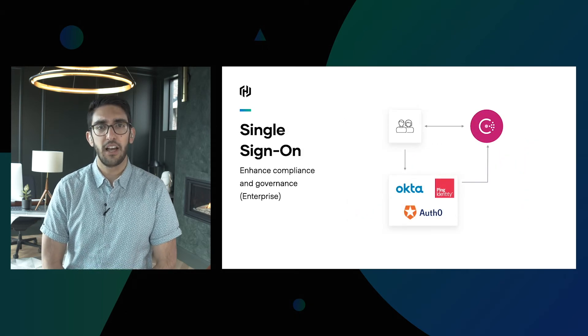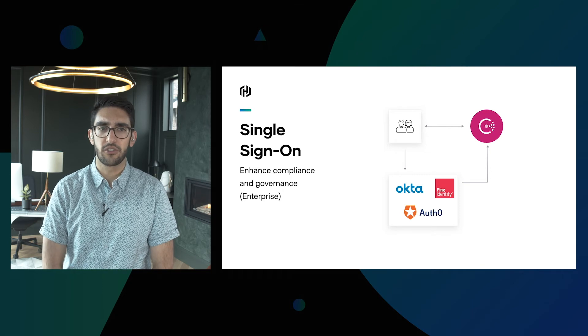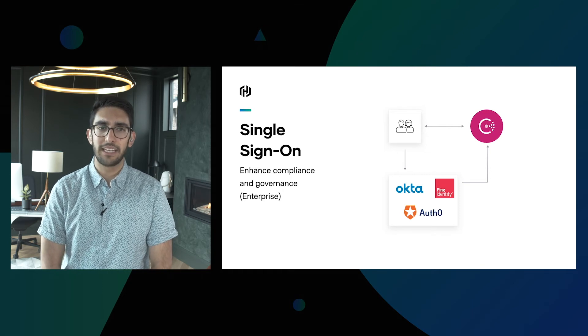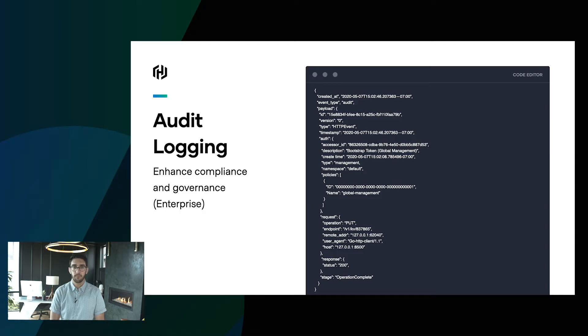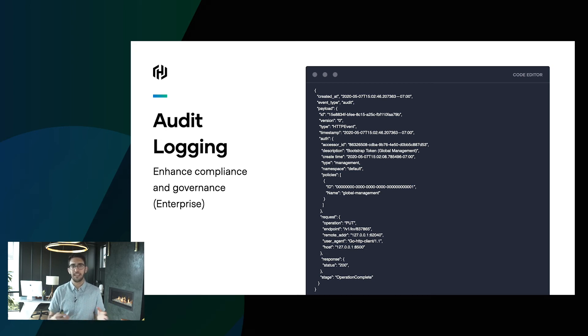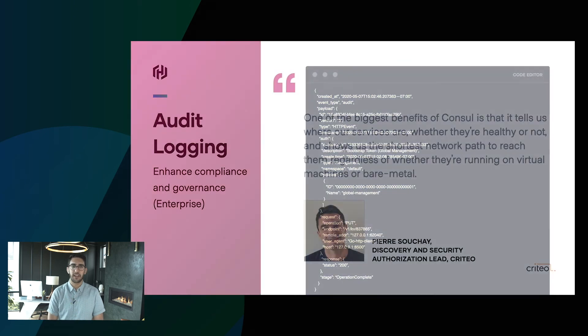For enterprise settings, another critical piece is single sign-on. If I have users and their identities being managed by Okta, Auth0, or Ping, how do I do single sign-on so that I can use my identity in those systems to broker access to systems within Consul? The next big one has been audit logging — as users are accessing these systems or we're going system to system, how do we have an audit trail of who performed what action and when? This gives us the forensics and compliance capabilities to leverage a system like Consul in an enterprise setting.